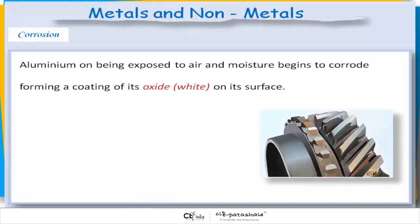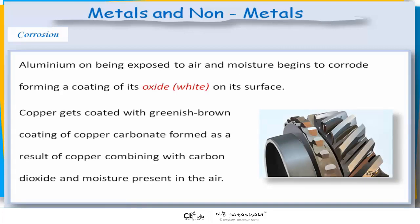Aluminium, on being exposed to air and moisture, begins to corrode, forming a coating of its oxide on its surface. Copper gets coated with a greenish-brown coating of copper carbonate, formed as a result of copper combining with carbon dioxide and moisture present in the air.